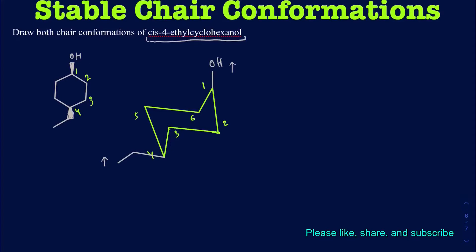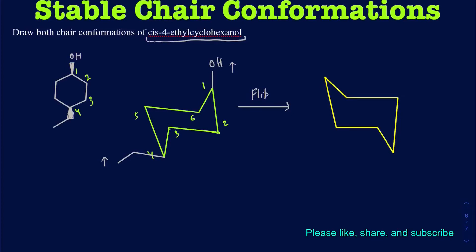Now I want to draw the flipped form of it. When I flip this, this becomes carbon 1, that's 2, 3, 4, 5, and 6. Another way of saying it: when you're flipping, this carbon corresponds to this one on the new chair, and you can follow along and clearly see that carbon number 4 is now at this new position. That's what the flipping really means.